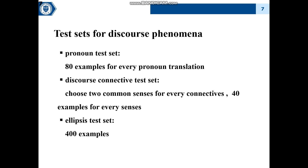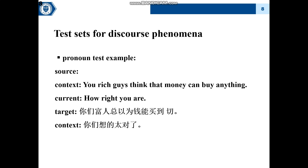We select 80 examples for each pronoun translation and 40 test examples for every sense of connectives. The ellipsis test set is composed of 400 test examples. We also want to show some examples in our test sets for better understanding.